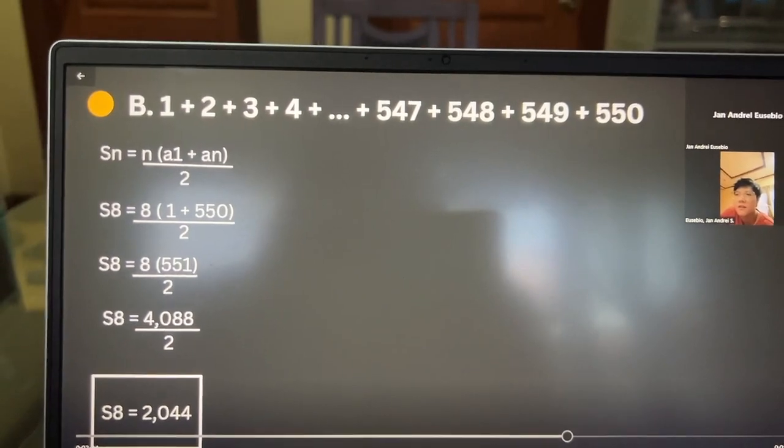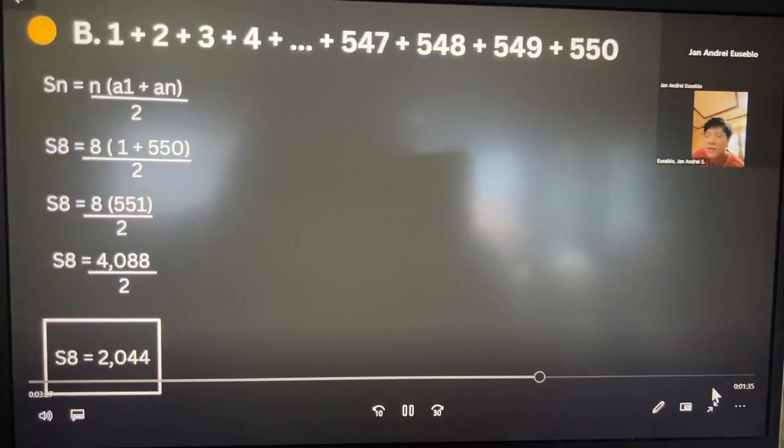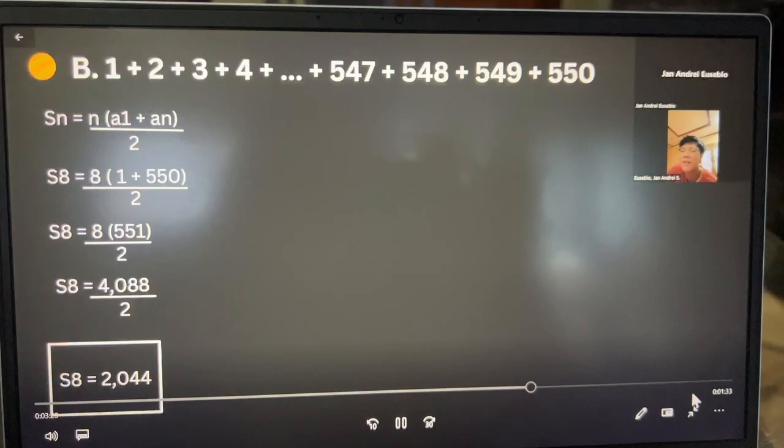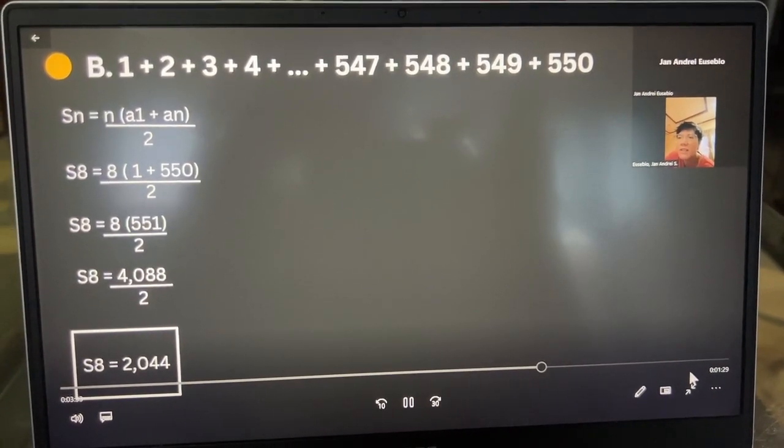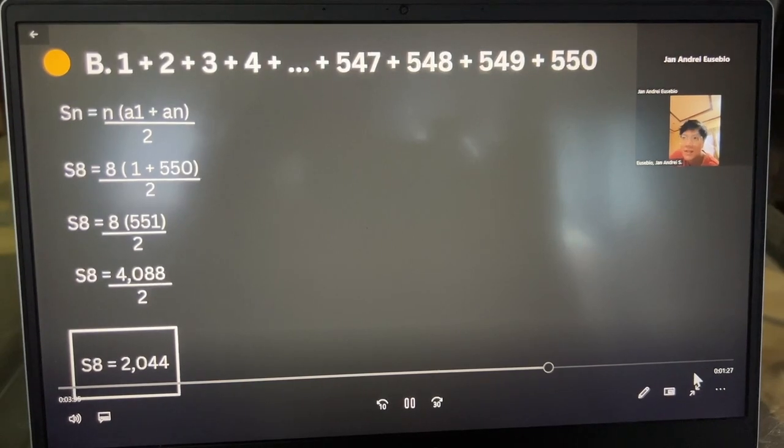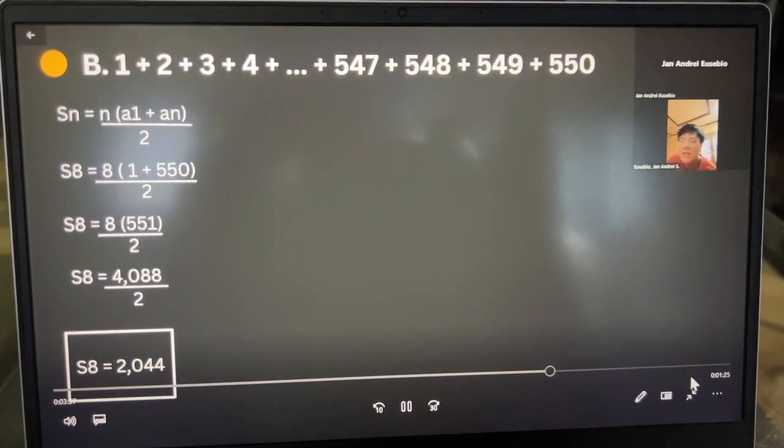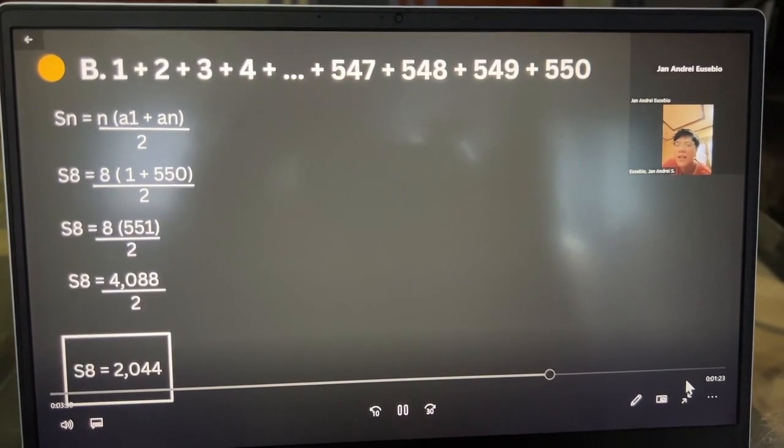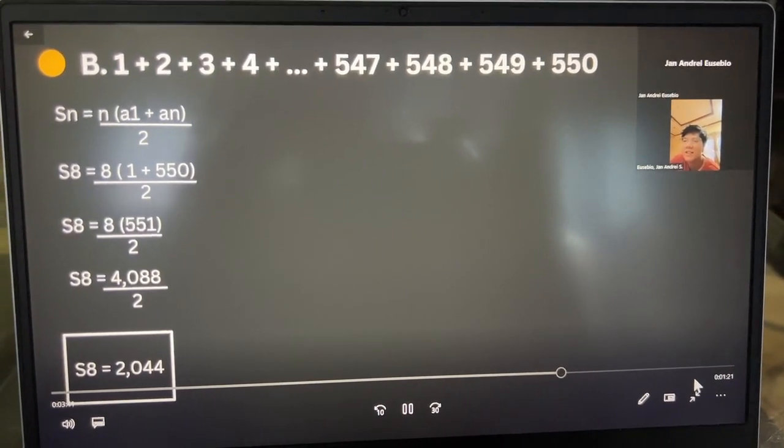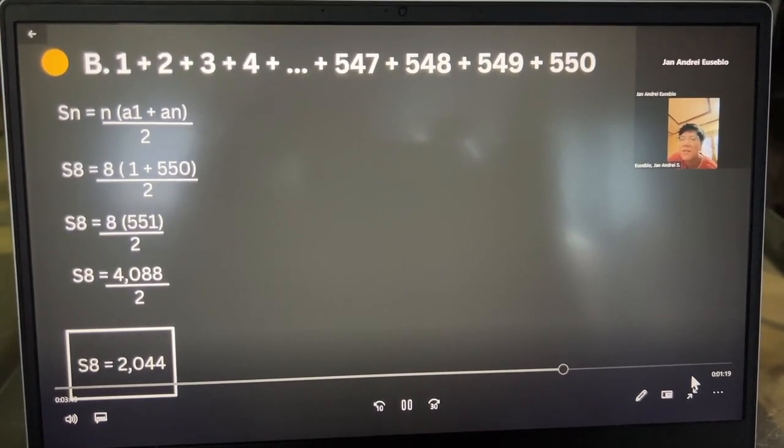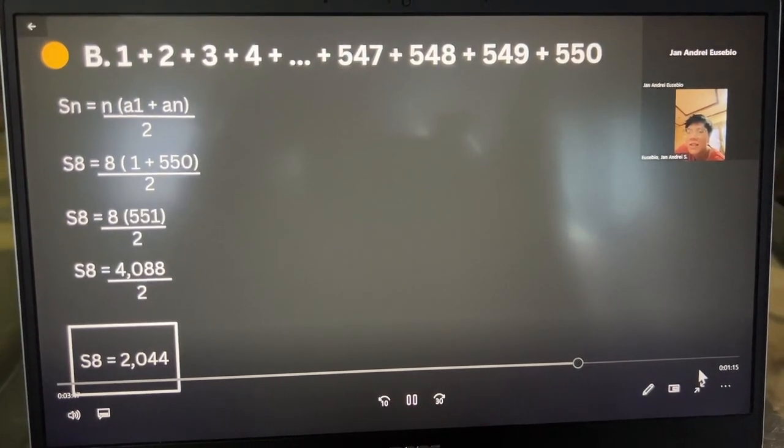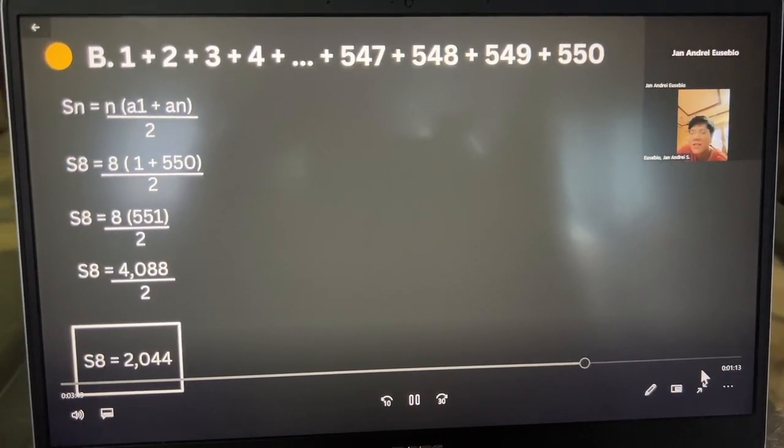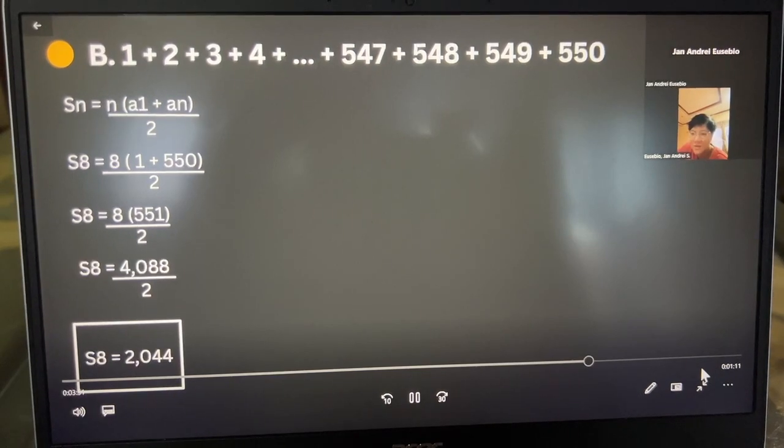Over 2 equals, in the next step, 551. So what we'll do again is multiply by 8, because 8 is the number of terms, so it becomes 4,088. So we divide this again by 2, and our answer is S sub 8 equals 2,044.